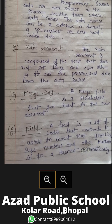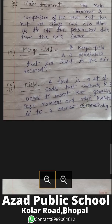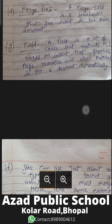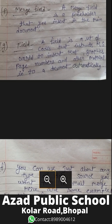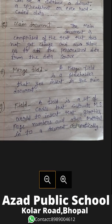The main document is comprised of the text that does not get changed and also allows you to add personalized data from the data source. A merge field is a placeholder that you insert in the main document. A field is a set of codes that instructs MS Word to automatically insert text, graphics, page numbers, and other material into a document.